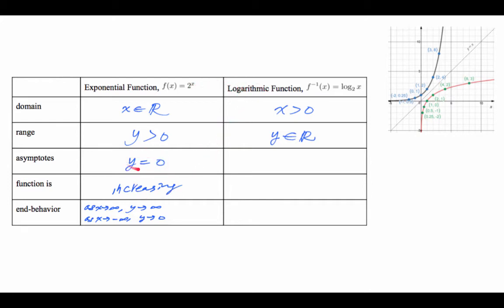So asymptote, without even looking at the graph, if y is equal to 0, maybe it's x equal to 0, and it is. If you look at the asymptote right there, that is x equal to 0. And the function in this case is increasing.